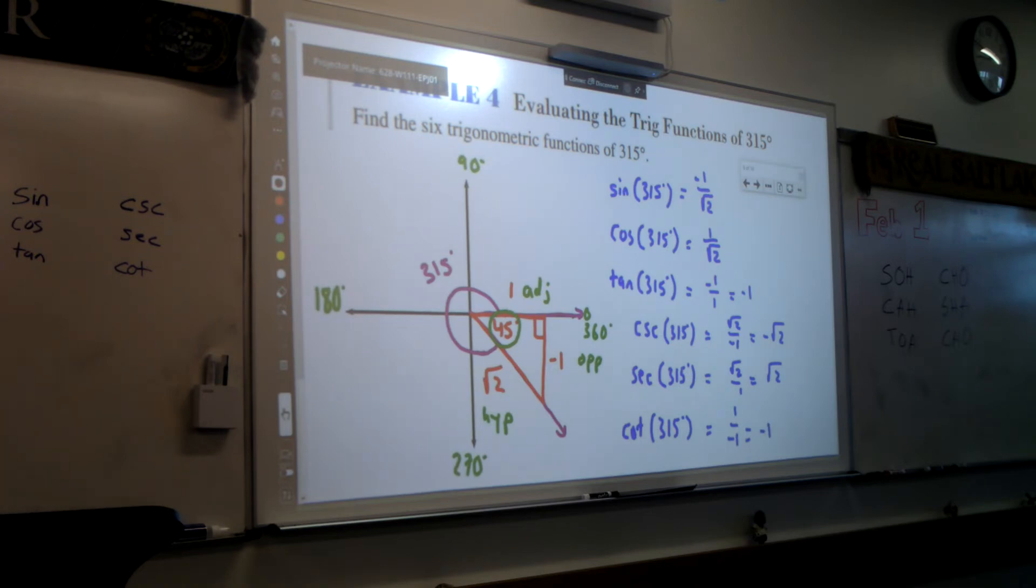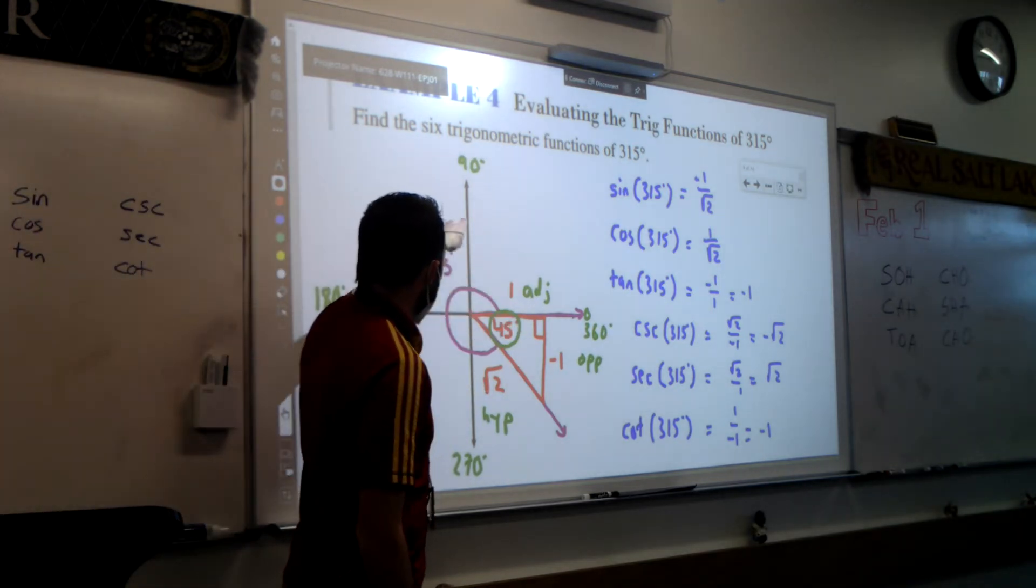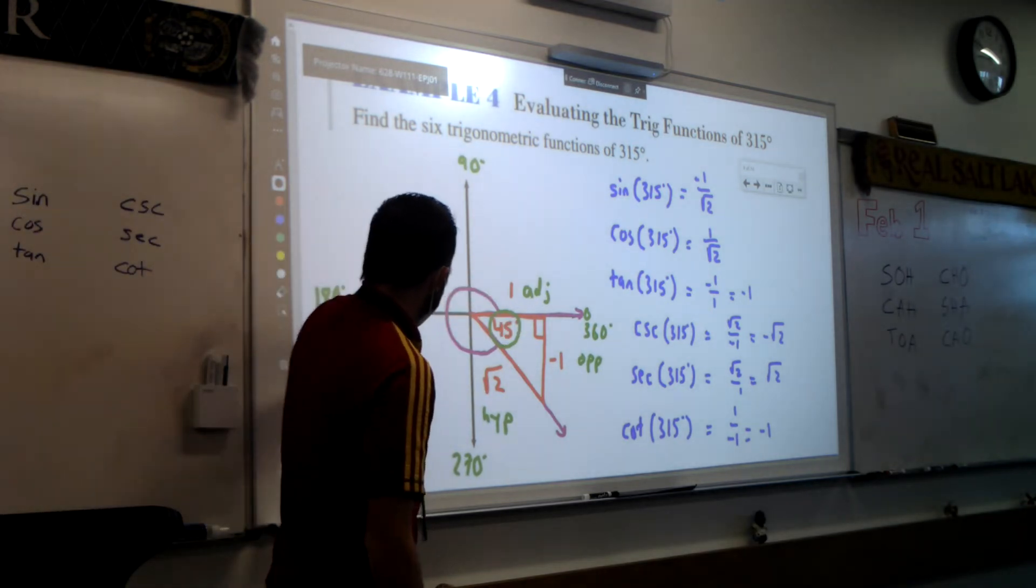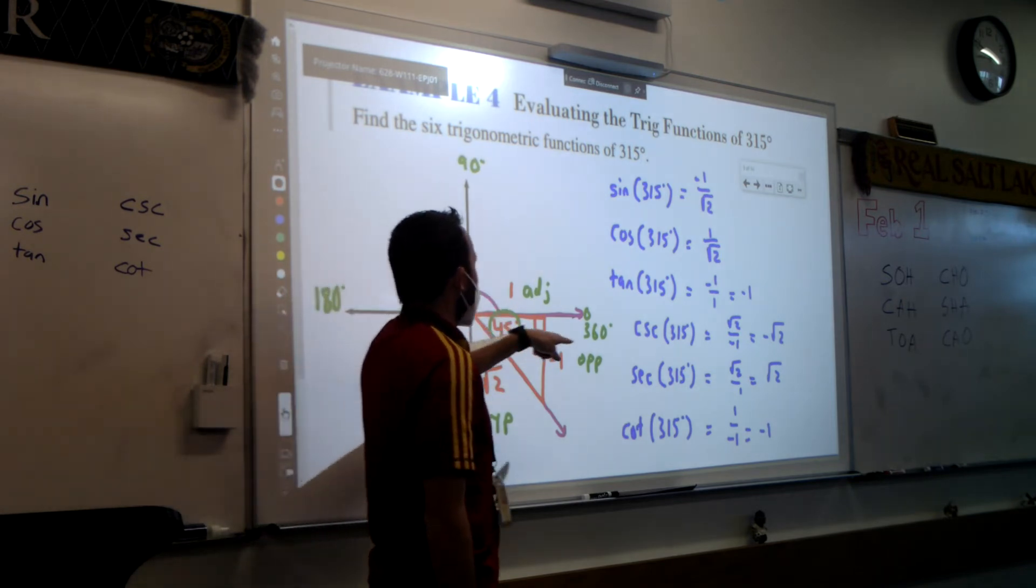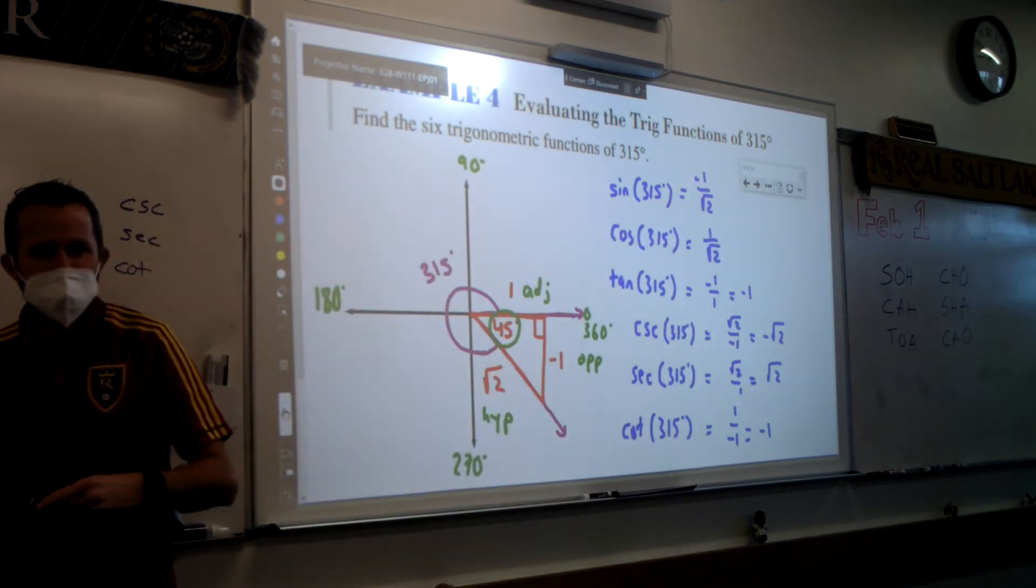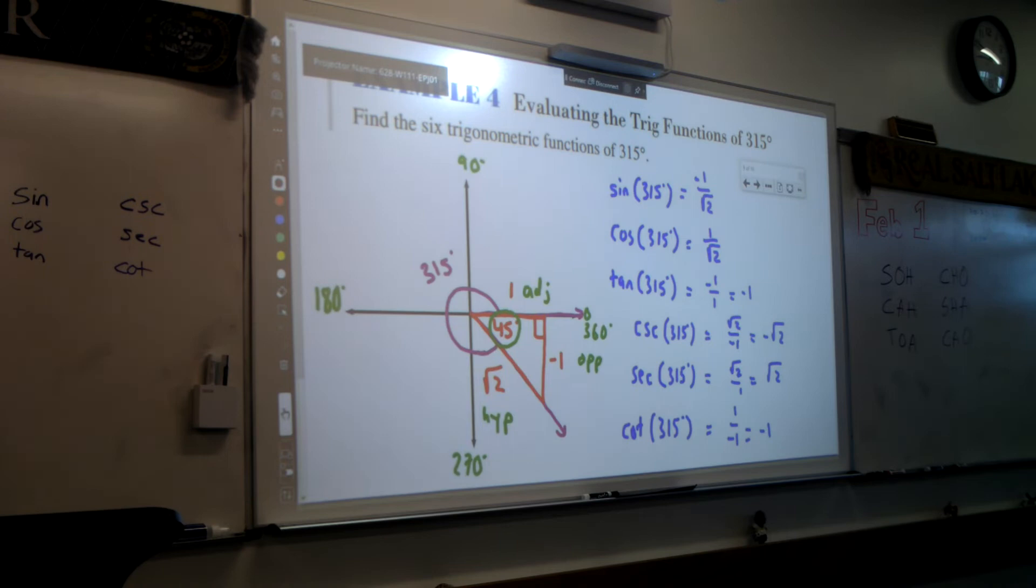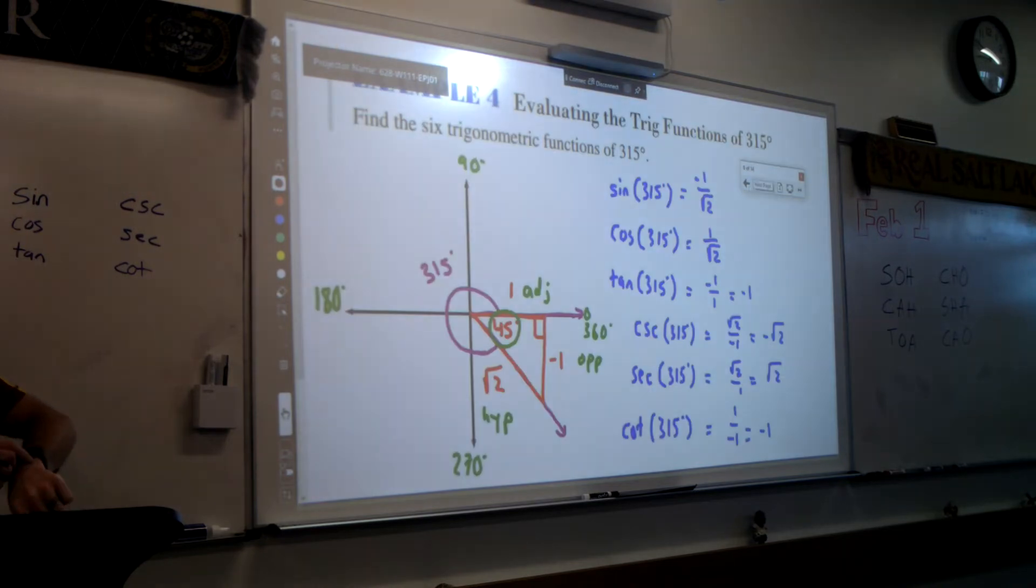Now if I were to compare these with another angle that used 45 degrees, like if I did 45 degrees or if I did 135 and drew the reference angle here, or if I did 225, we're going to see these same ratios, but all that's going to change is what's positive, what's negative. Okay? Same kind of thing there. Alright, we're kind of running out of time but we're getting there. You guys are doing awesome. Stay with me just a little bit longer.